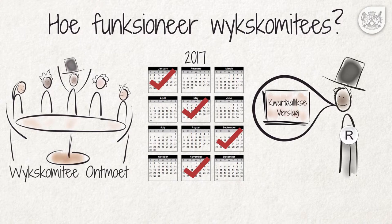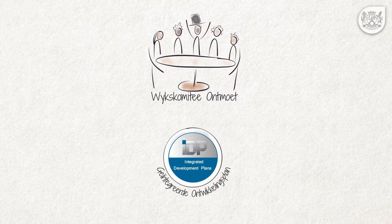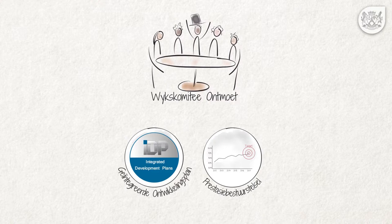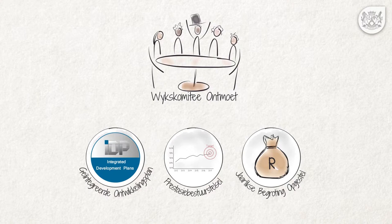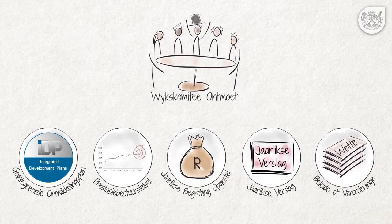Ander geleenthede wanneer komitees behoort te vergader: wanneer die Geïntegreerde Ontwikkelingsplan, of kortweg die GOP, opgestel of hersien word — die GOP is die primêre strategiese plan van die munisipaliteit en stel uiteen wat dit wil bereik en hoe. Wanneer die prestasiebestuurstelsel opgestel of hersien word — die stelsel word gebruik om prestasie en doelwitte van die munisipale strategie te meet. Wanneer die jaarlikse begroting opgestel word — die begroting bevat die verwagte inkomste en uitgawes van die munisipaliteit. Wanneer die jaarverslag van al die munisipaliteit se aktiwiteite, insluitend die geouditeerde finansiële state en ouditverslag, oorweeg word. Wanneer die wykskomitee die beleide of verordeninge wat die wyk of die munisipaliteit raak, oorweeg.